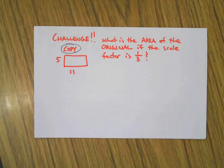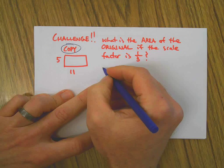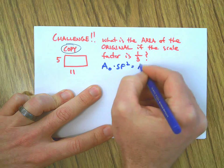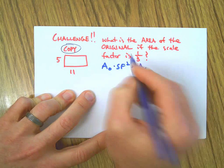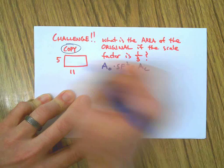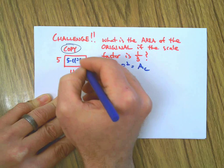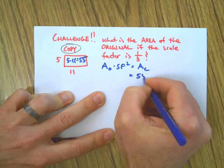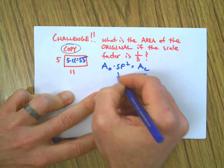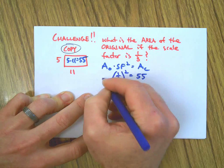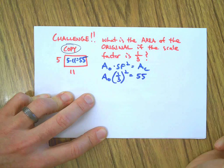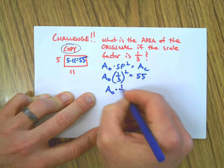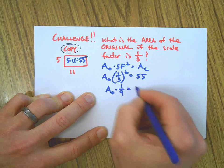Okay, that's good. Let's see how this one works. Okay, so remember our formula. The thing we have here though is the area of the copy, all right, which is 5 times 11, or 55. Okay, so we have that already and we have the scale factor, so we can substitute that. We just don't have the area of the original.